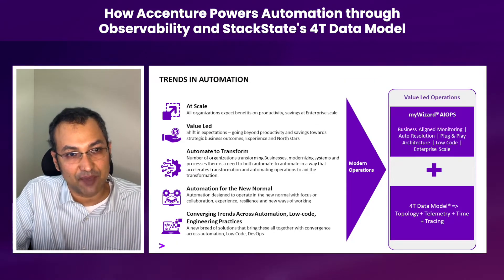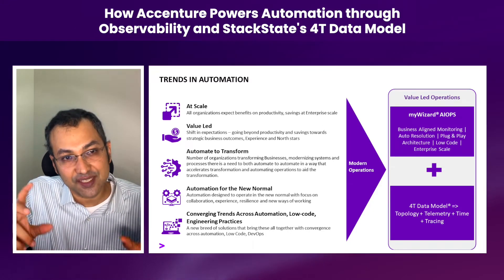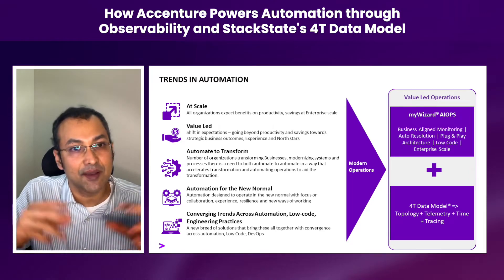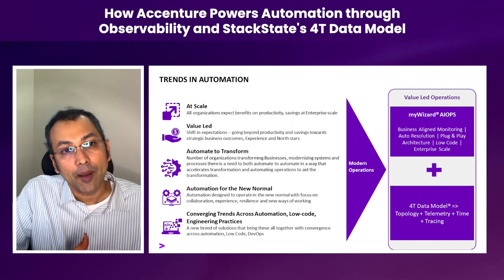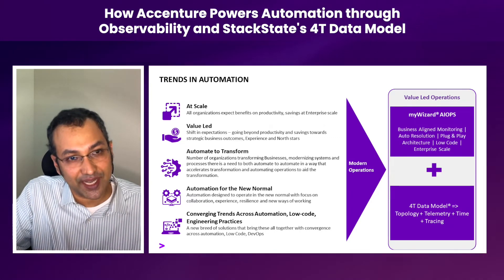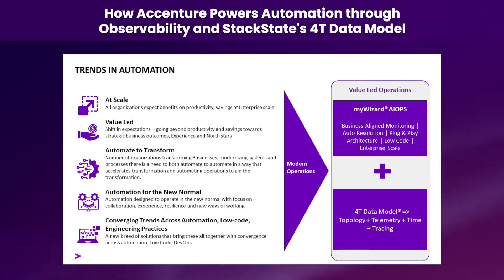In recent times, especially after the pandemic, there is a lot of focus on automation in the new normal — much higher focus on system resiliency around critical processes, making sure our applications and processes are much more resilient, and automation that helps us in virtual ways of working. Finally, a trend that is emerging is there is a lot of convergence between what we traditionally call automation, engineering practices, and low-code. All of these are coming together in the same automation solution, bringing them together to do automation in a way that will scale and stay future-proof.